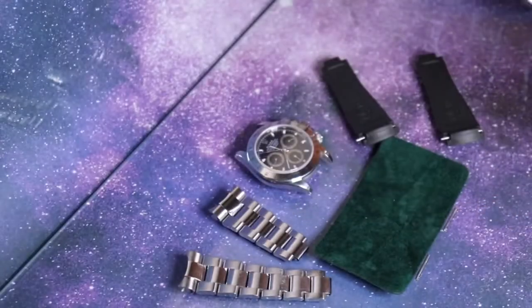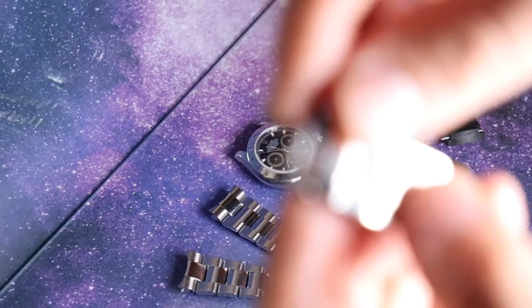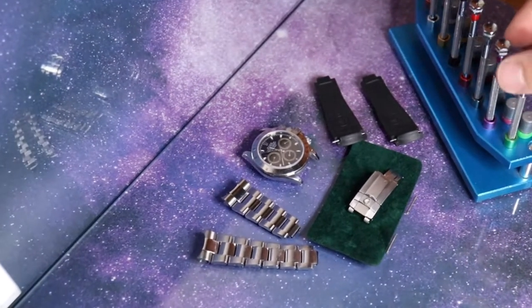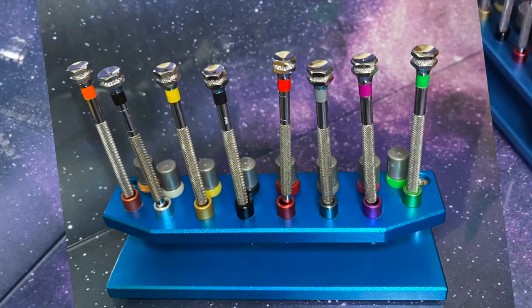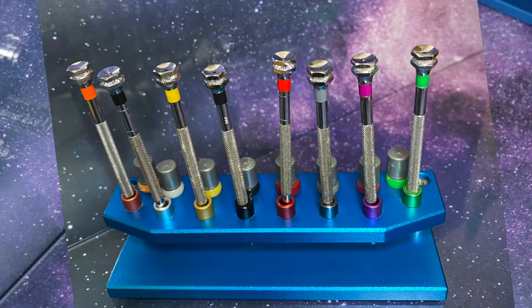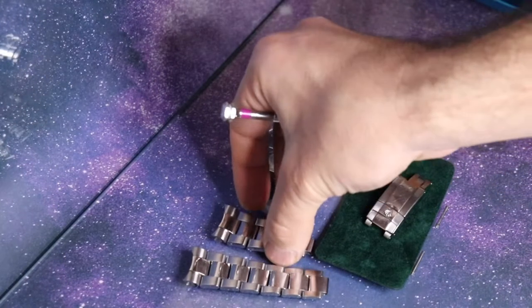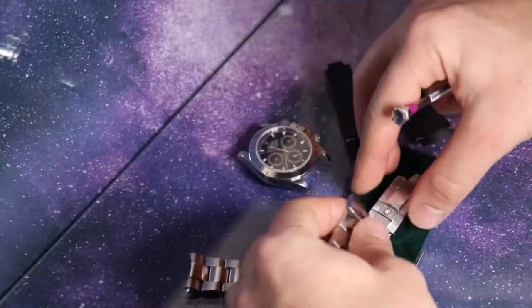Now I recommend that you keep the clasp closed at all times because if you don't pay attention, you could actually, when you're installing the six o'clock position element, this part of the clasp could actually go backwards to the other side. And that could be troublesome for you, so just leave that closed at all times.